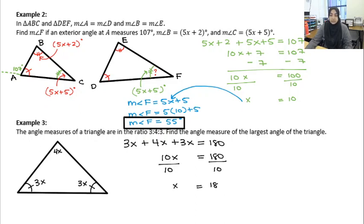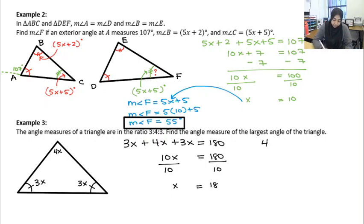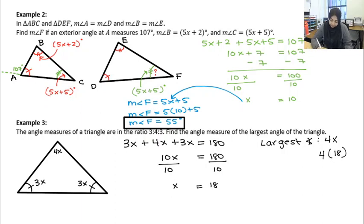Solving for x gives x equals 18. It says find the angle measure of the largest angle, and using number sense, the largest angle is 4x. So the largest angle equals 4 times 18, which is 72 degrees. If you've got any questions, be sure to ask during class or during tutoring. Thank you very much for watching.